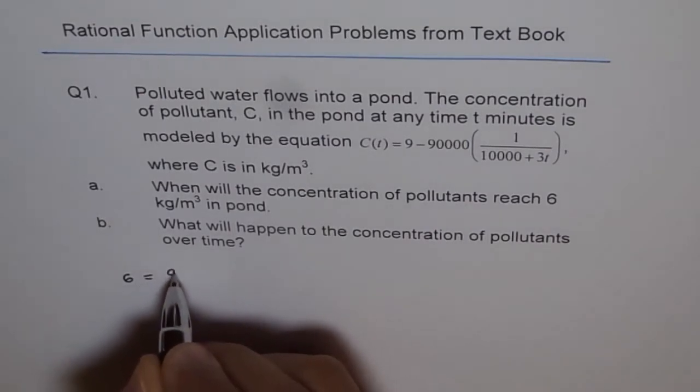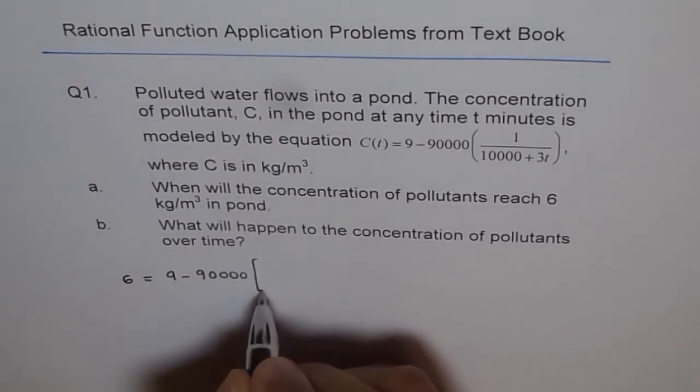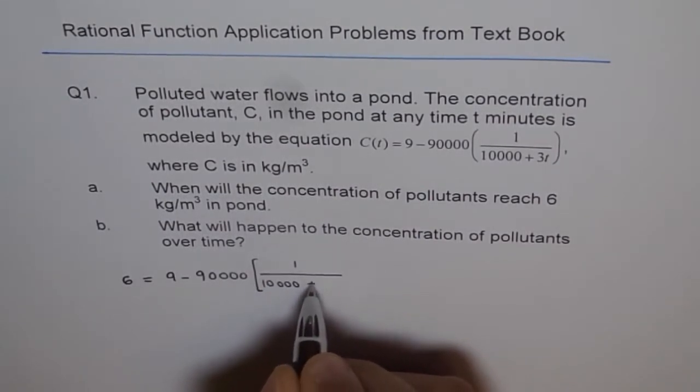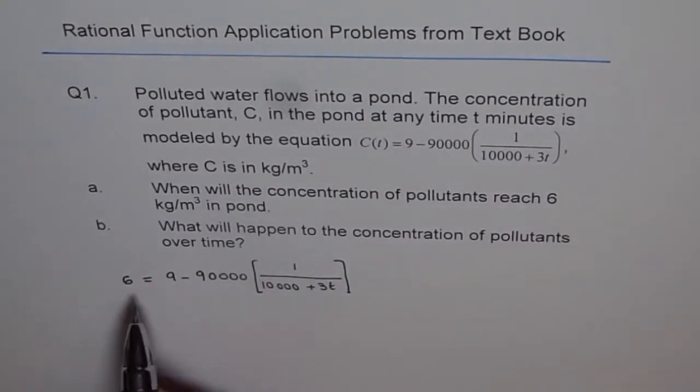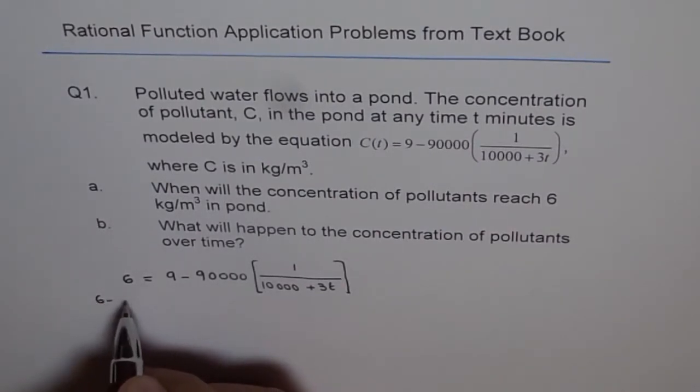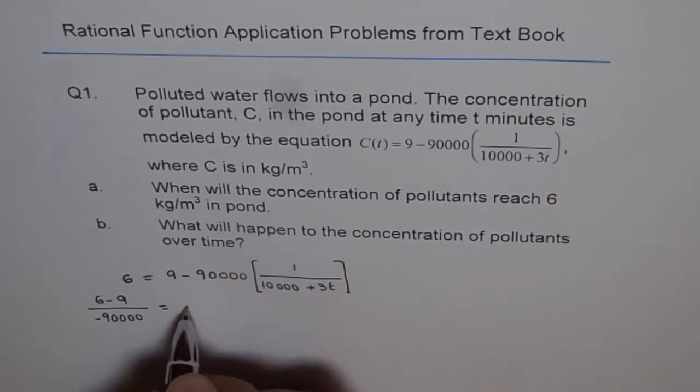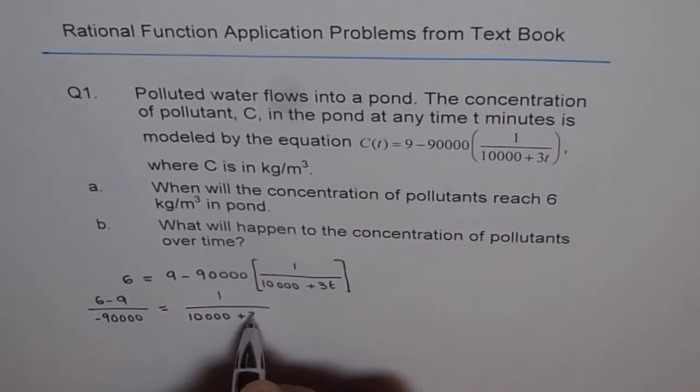So 6 equals 9 minus 90,000 and within bracket we have 1 over 10,000 plus 3t. So to find this, we'll do 6 minus 9 divided by 90,000, and then we'll do cross multiply later. So we'll do 6 minus 9 divided by minus 90,000. Let me write minus 90,000 equals to 1 over 10,000 plus 3t.